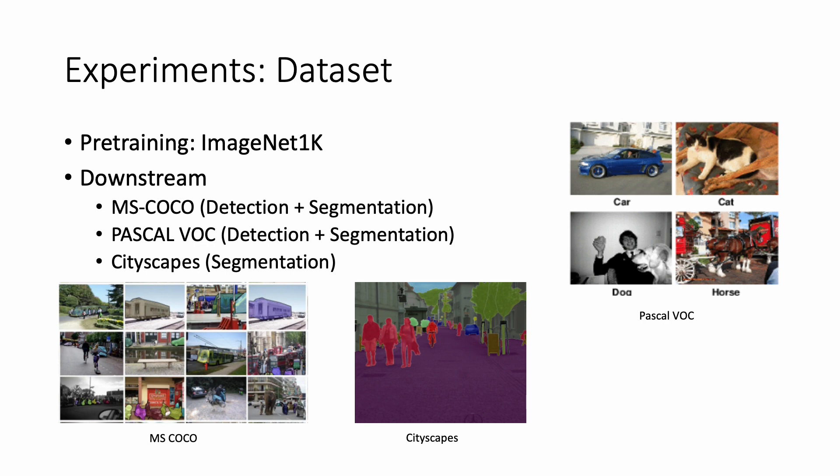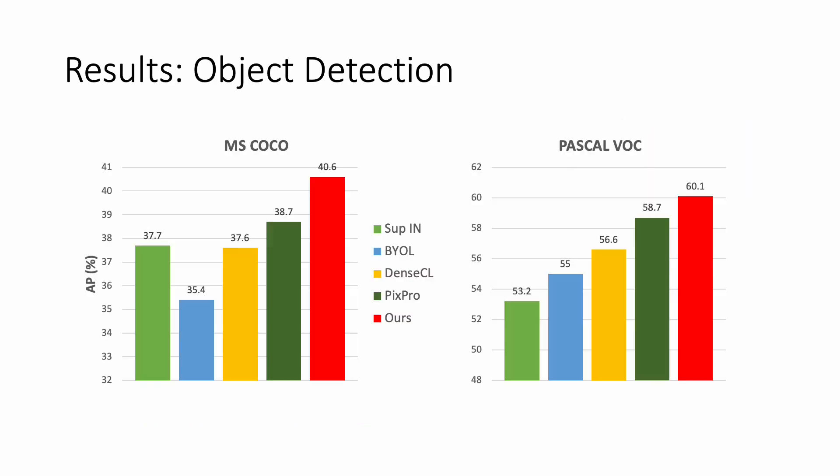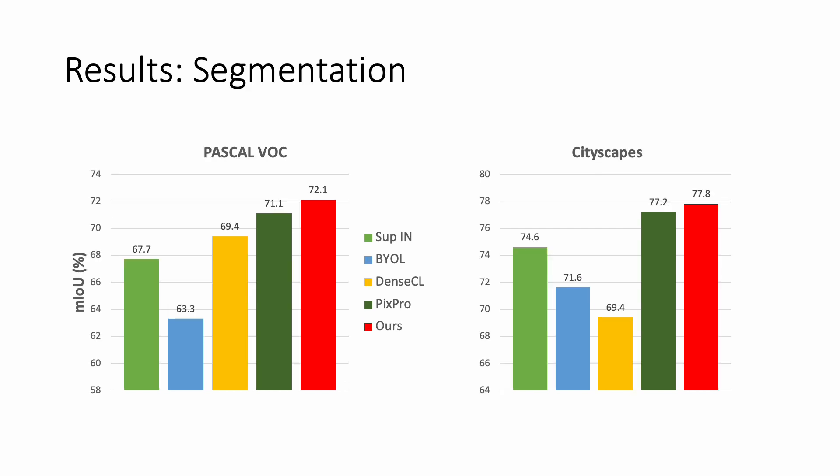We provide experimental results on popular detection and segmentation datasets — MS COCO, PASCAL VOC, and Cityscapes. On object detection for MS COCO and PASCAL VOC, we outperform the previous state of the art by 1.9% on COCO and 1.4% on VOC. We also show similar performance improvement on segmentation results on VOC and Cityscapes.